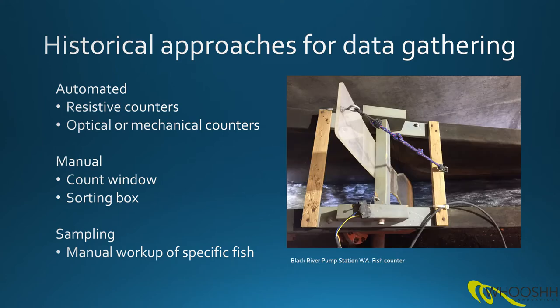This picture shows a specific example of a mechanical counter at the Black River pump station in Washington. In this example, the fish go over a false weir and slide down a chute where they interrupt this device to trigger the small microswitch to give a fish count of adults as they pass upstream.